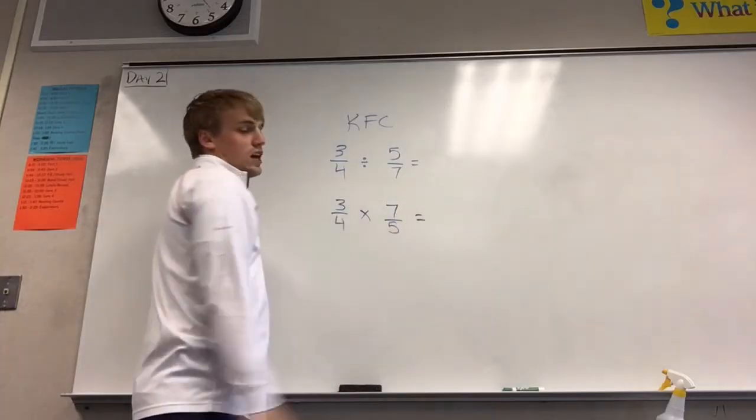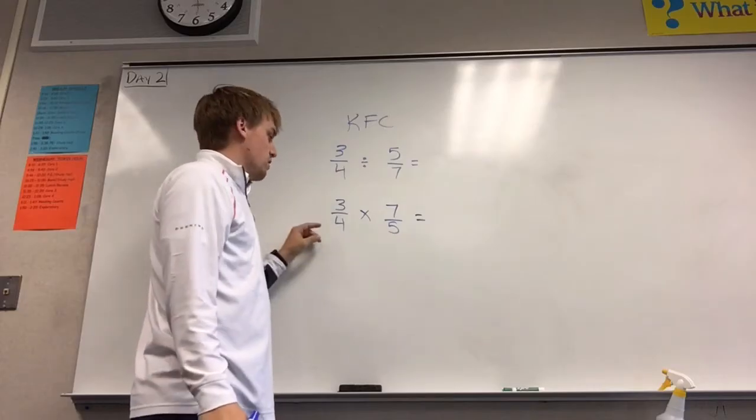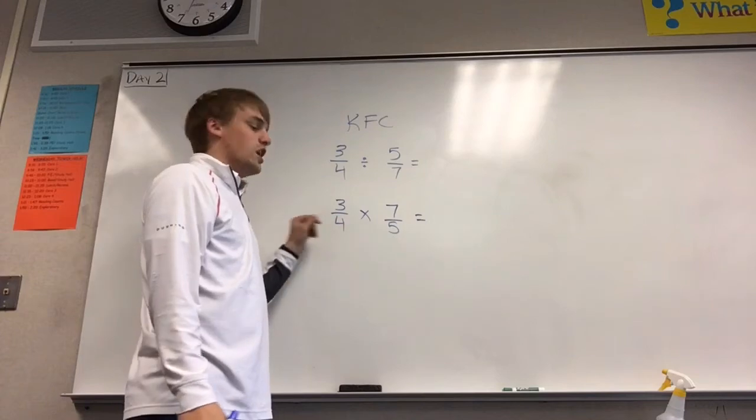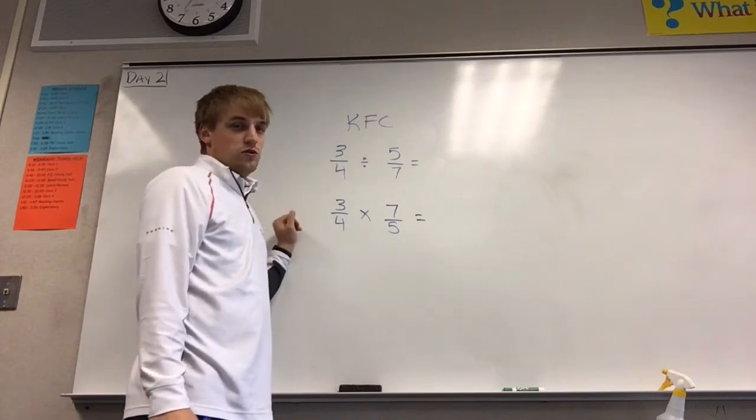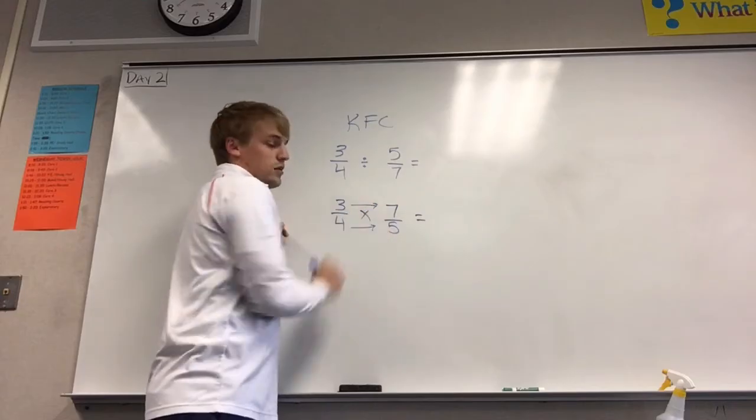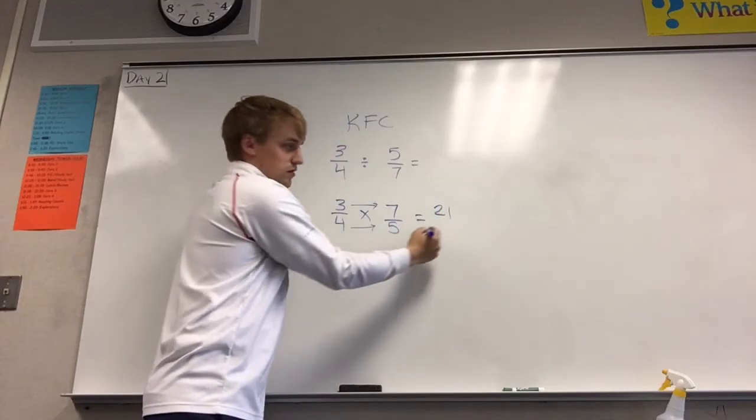Now that we've KFC'd the division to make it a multiplication problem, we first look to see if we can cross-cancel. Okay, we cannot cross-cancel so what we're going to do is just multiply across. Three times seven is twenty-one and four times five is twenty.